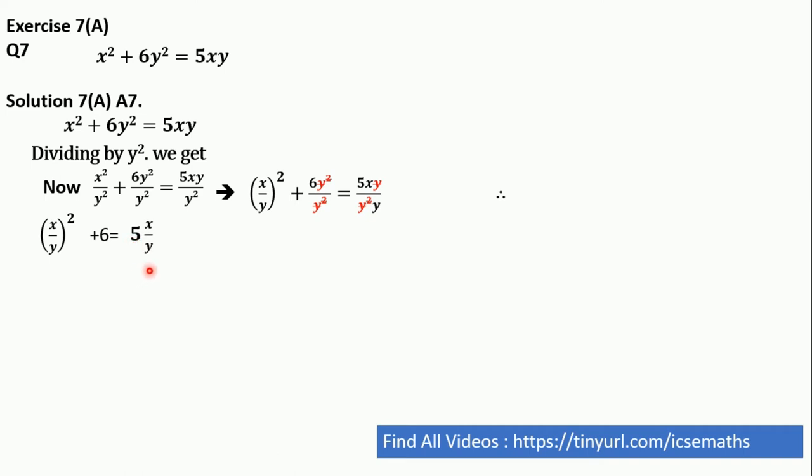Now, let's make this as a quadratic equation. For that, we need to move this 5x by y to left hand side. So this will become x by y whole square, and while moving 5x by y this will become negative, minus 5x by y plus 6 is equal to 0.